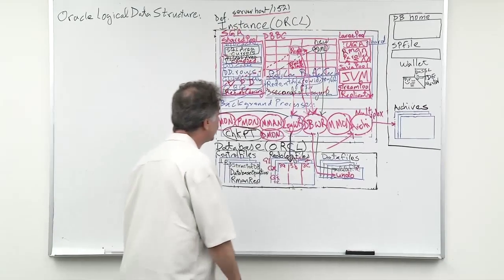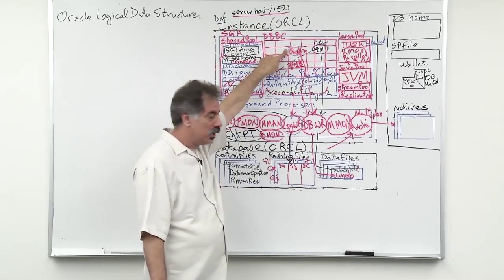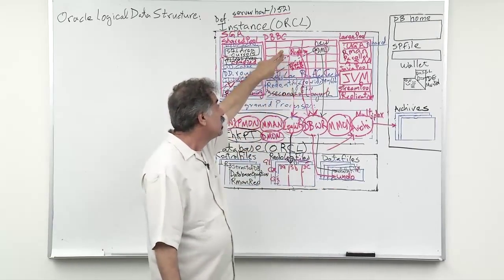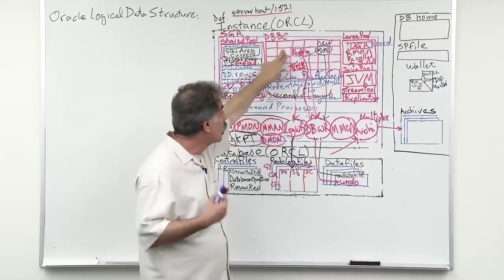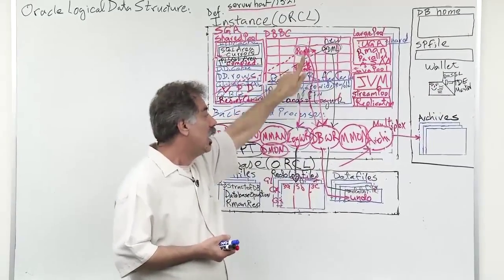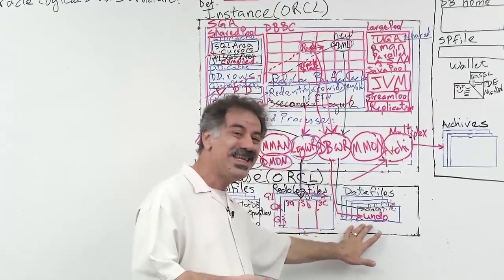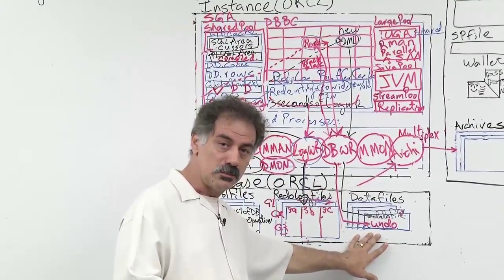As we said, the smallest piece of data to Oracle that we can read off the disk and use within Oracle Database is an Oracle Block. Now, an Oracle Block can be made of many operating system blocks.